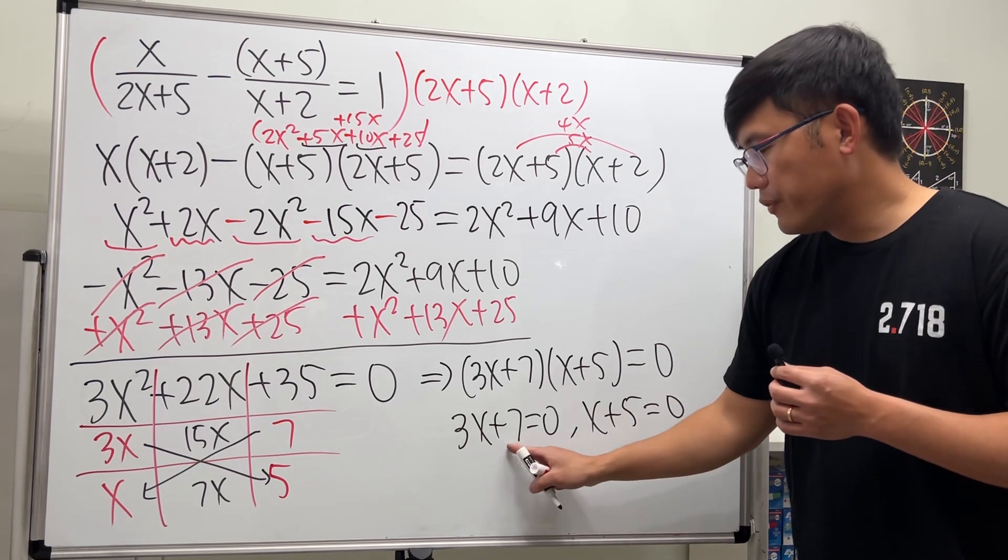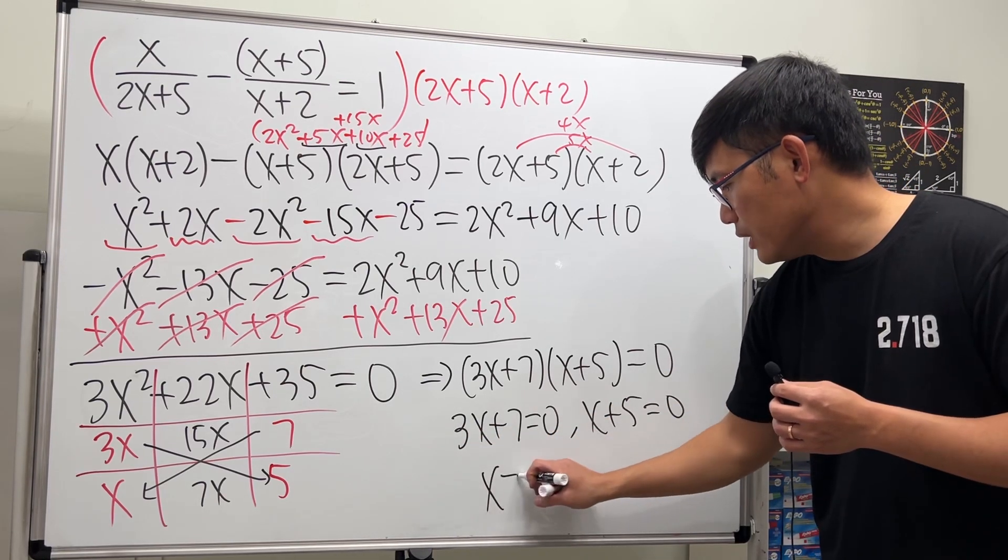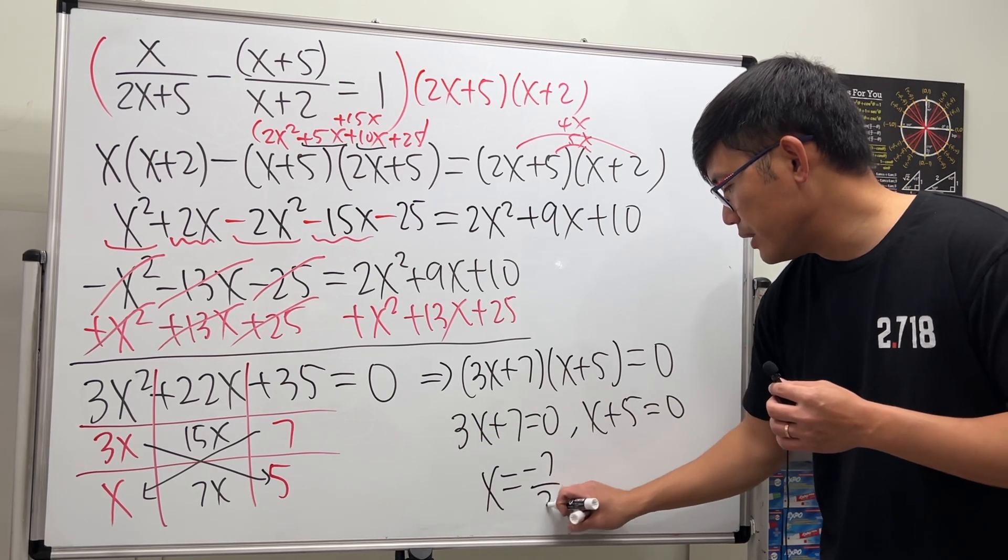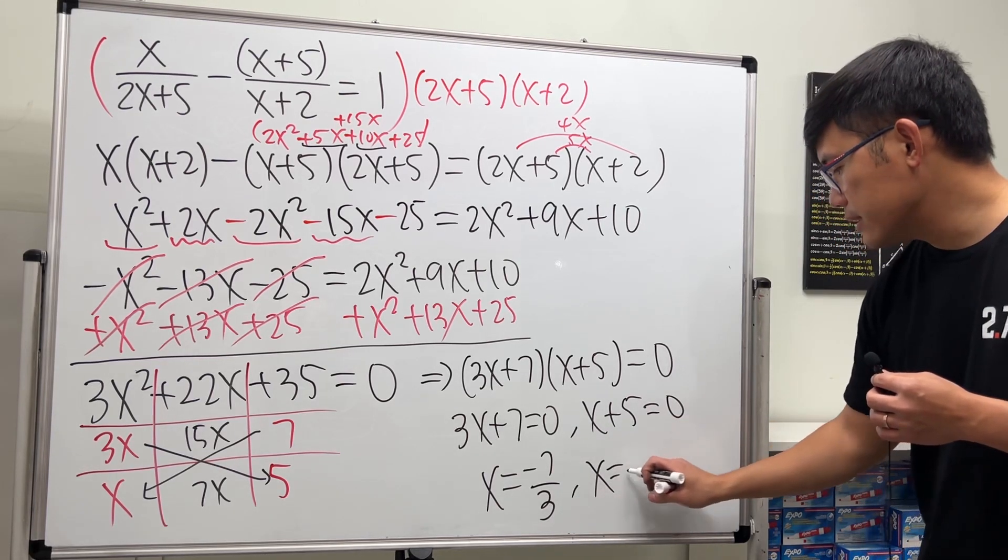Solve this: move the 7 to the other side and divide the 3 on both sides. x equals negative 7 over 3. Move the 5 to the other side: x equals negative 5.